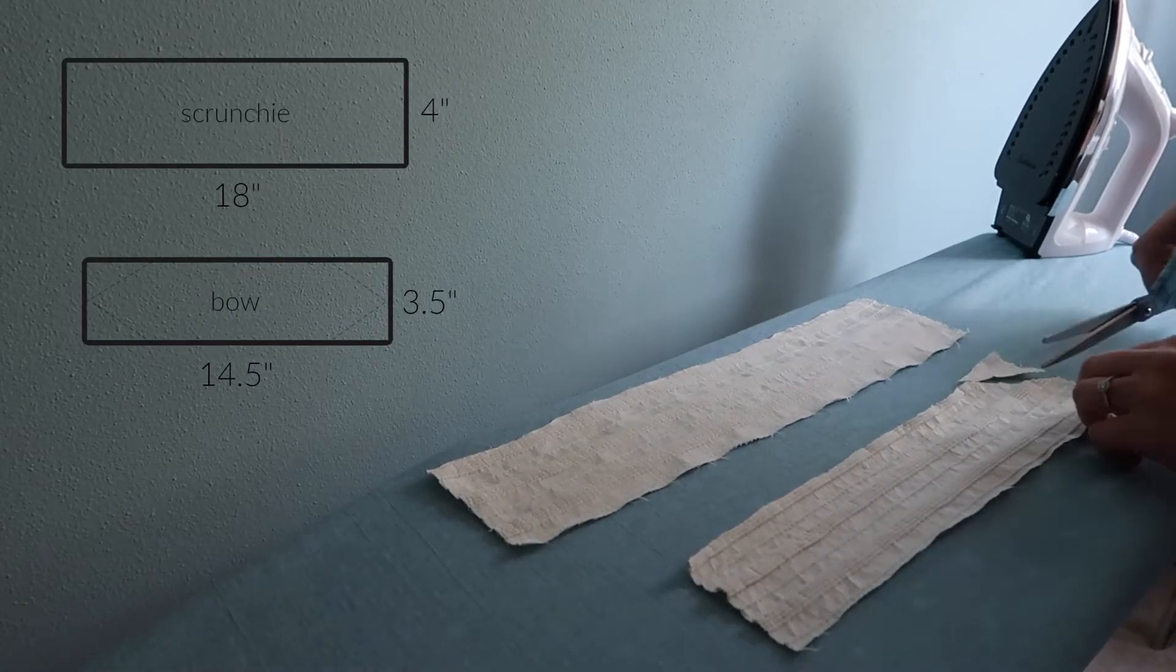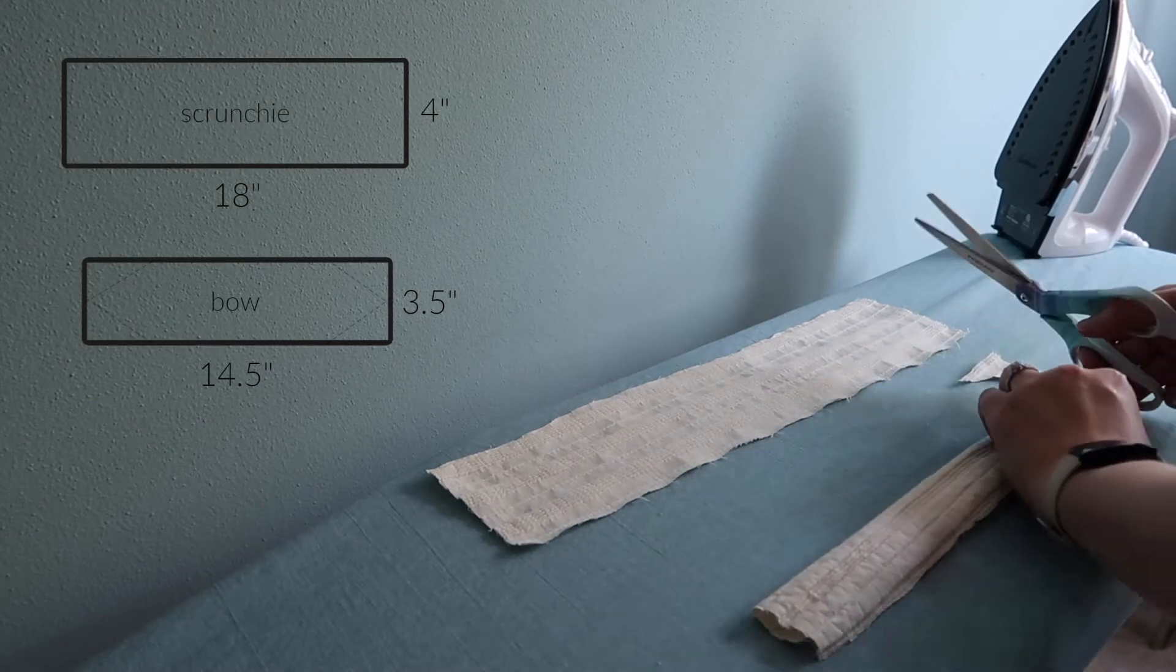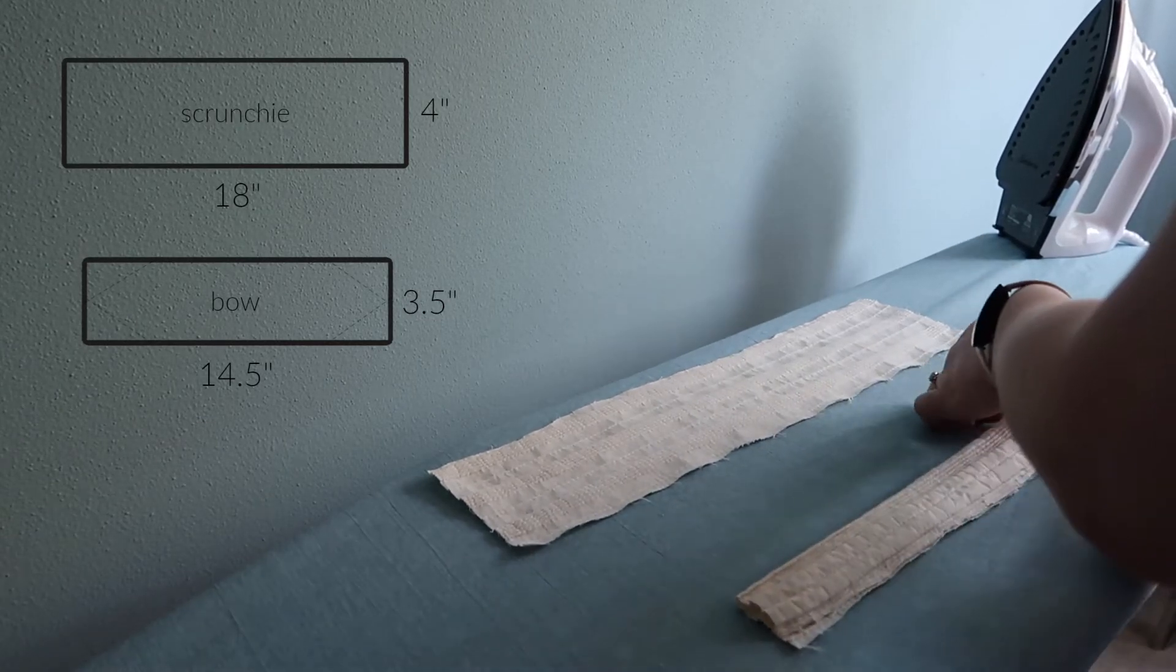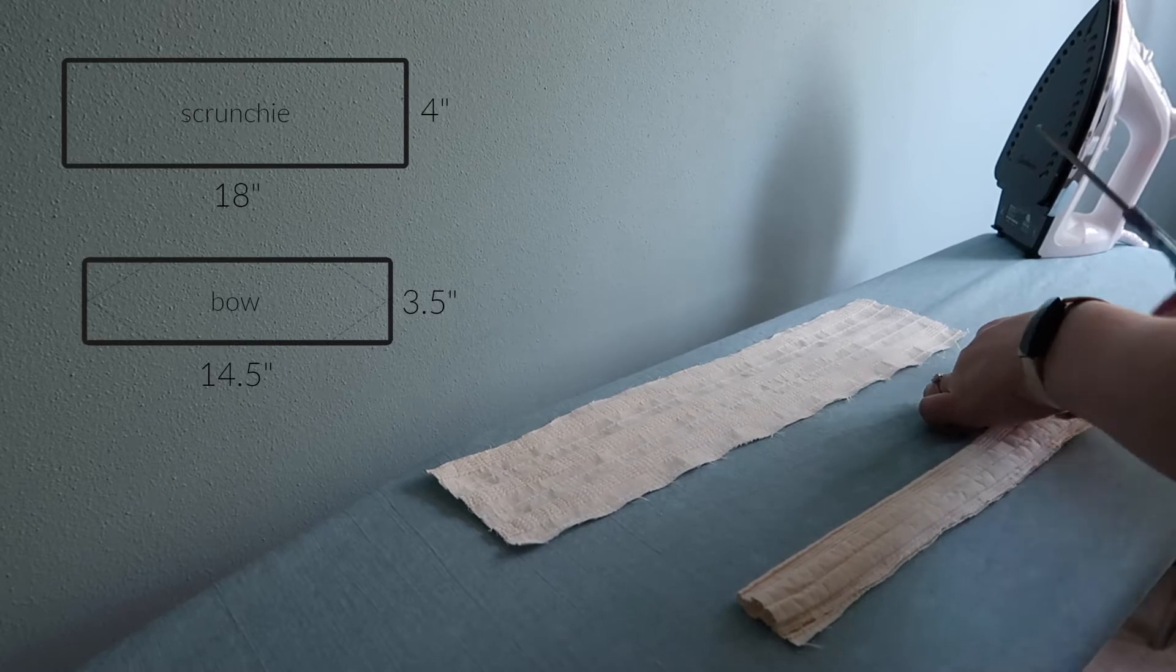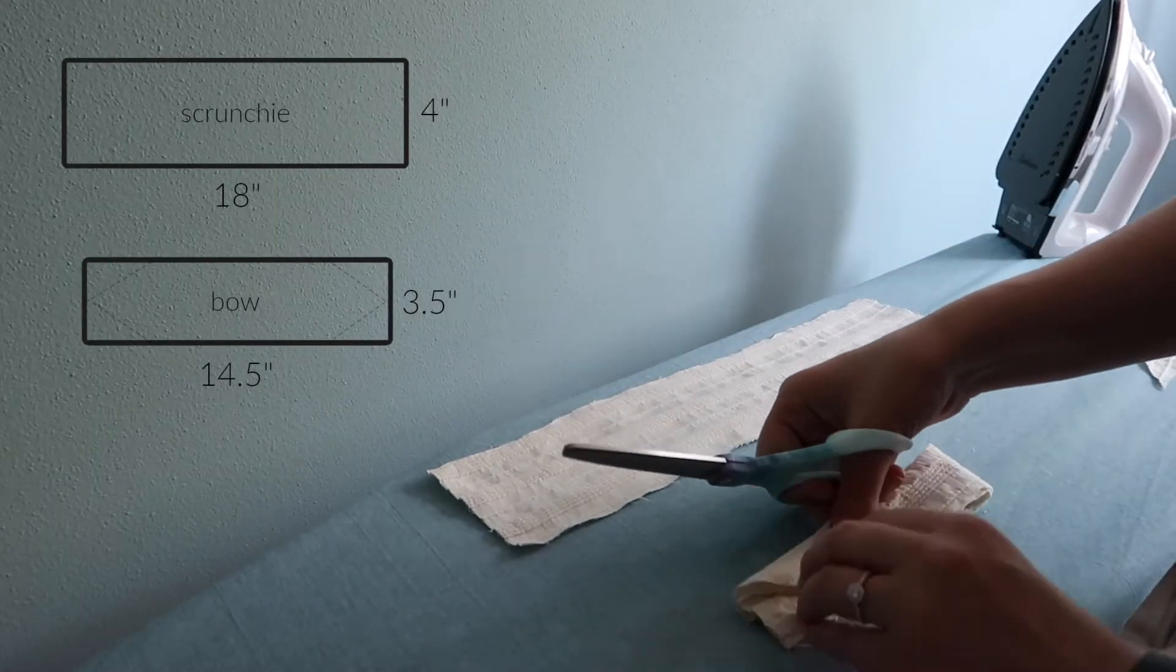To make these super cute and easy scrunchies, you'll need two pieces of scrap fabric. One that's 18 by 4 inches and the other that's 14 and a half by 3 and a half inches.